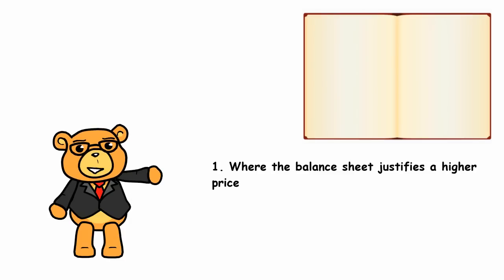One, where the balance sheet justifies a higher price than is prevailing in the market. Here, Graham would look for securities that sold below net current assets, which he used as a proxy for liquidation value. In the 1930s, there were plenty of securities meeting this criteria. Sadly, in today's markets, it's very rare to find any such cases.